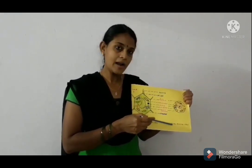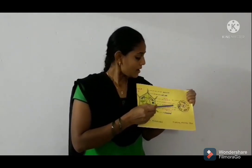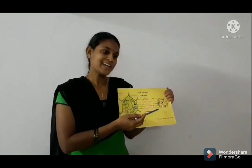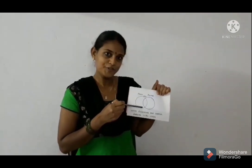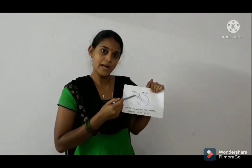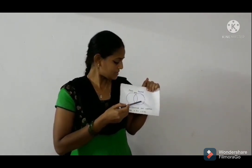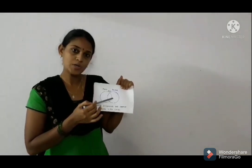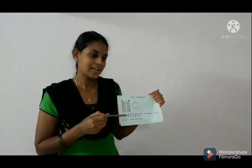Now let us discuss the typical animal cell. Animal cell also has parts similar to plant cell. All of you observe carefully. What are the main differences between these two cells? All of you draw two circles in your notebook and write down the differences between plant cell and animal cell. Write common features in the middle of the circles.